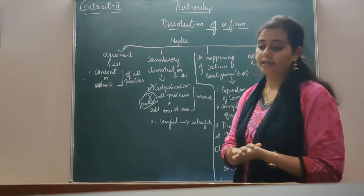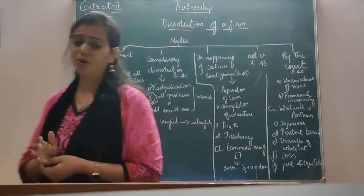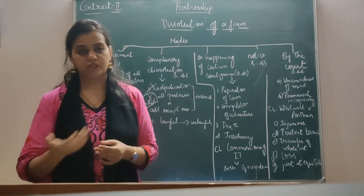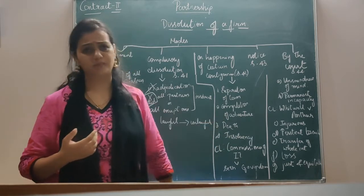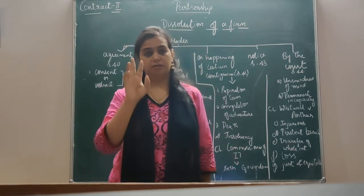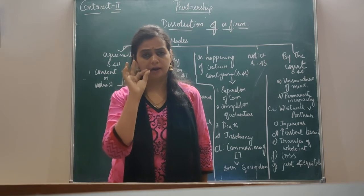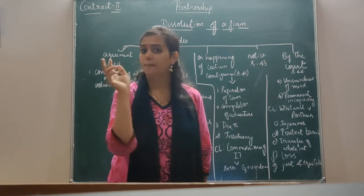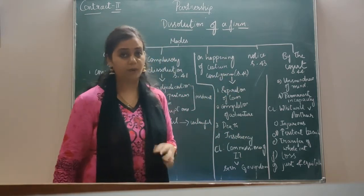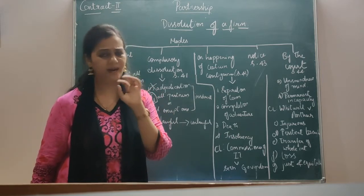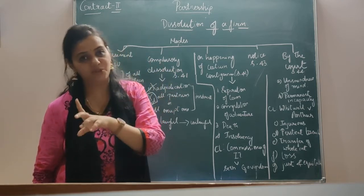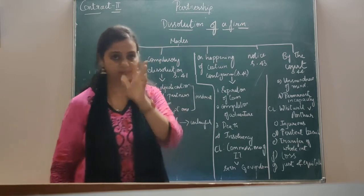The third contingency is upon death of a partner. If there is no agreement to the contrary, upon death of any partner it comes to an end. Also, if there are only two partners — A and B — and partner A dies, partner B alone cannot run the firm since at least two members must be there. Upon death of a partner the partnership firm dissolves, but if there is any agreement to the contrary that the business can continue, then the firm can continue.